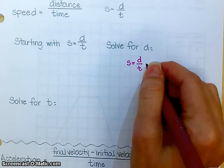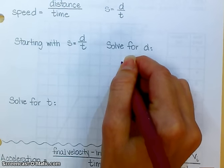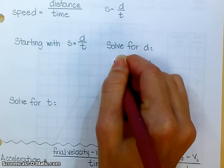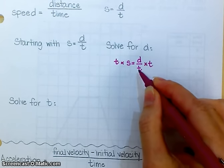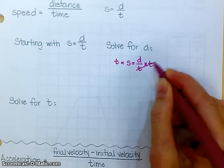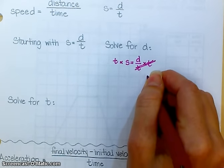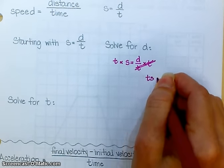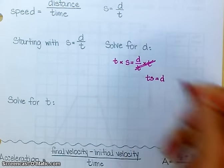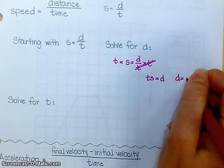So the first thing I'm going to do is multiply both sides by t. That is the opposite operation on this side, so I have divided by t and multiplied by t. That cancels t out. And you'll notice that I'm left with ts equals d, or distance equals speed times time.